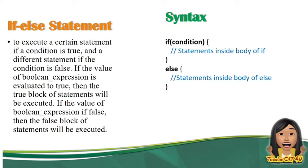This is the syntax of the if-else statement. So: if (condition), then the block of code for if — the body of if — then else, and this is the body of else. When the condition evaluates to true, it executes the if body. If the condition is false, it executes the else part.